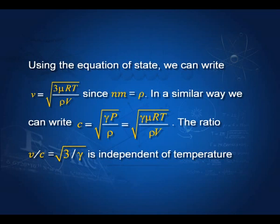Similarly, c equals the square root of gamma P by rho. Using the equation of state pV equal to RT, we can write c as the square root of gamma mu RT by rho V. Taking the ratio v by c, you can see that this ratio is independent of temperature.